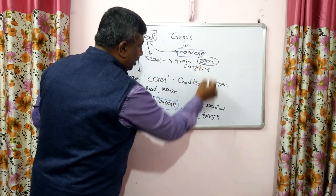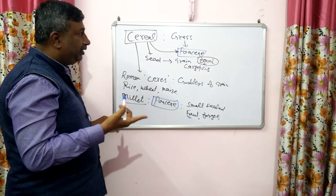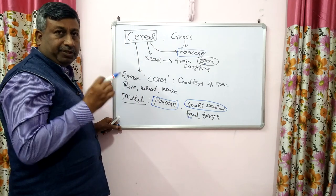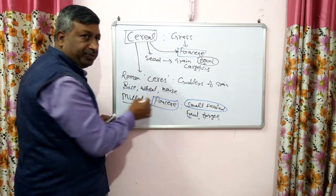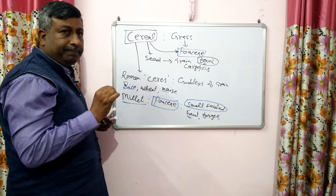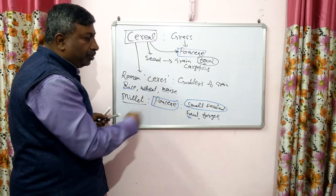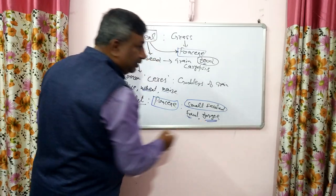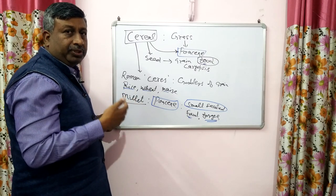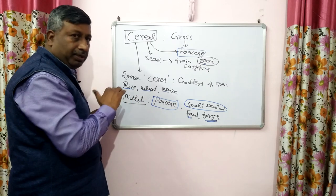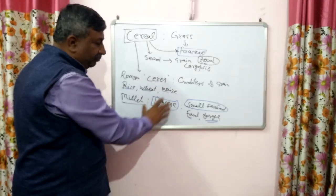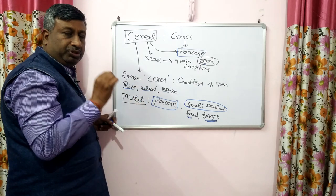What is the difference between cereal and millet? The difference is with respect to seed size — millets have very small seeds. In the case of rice, wheat, and maize, the seed size is large compared to millets. Millets are very drought-tolerant crops, grown in harsh conditions and high-temperature conditions. These are the characteristics of millets — very small-seeded crops which are called millets.